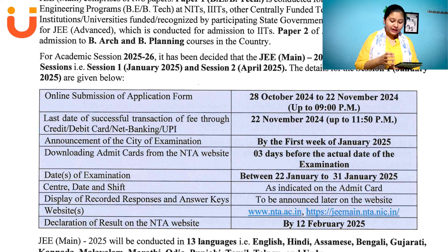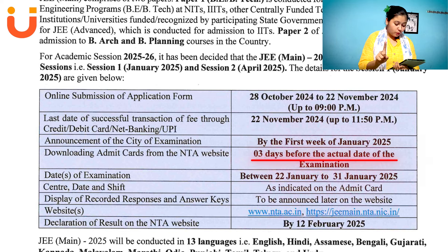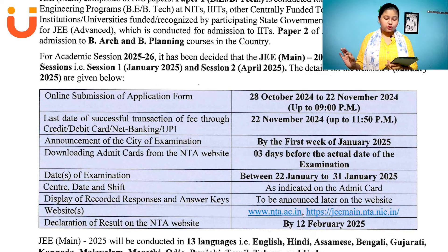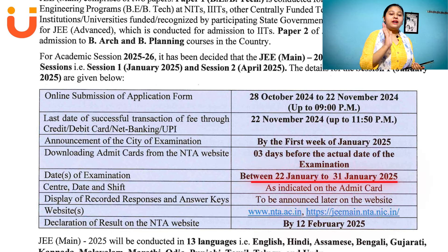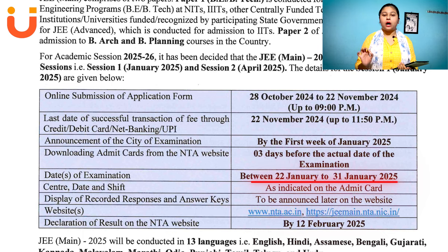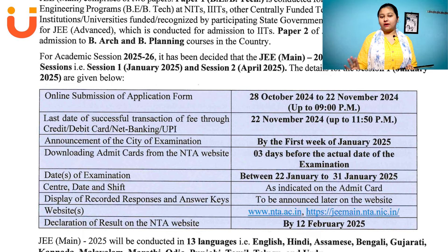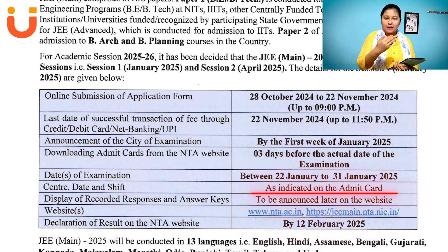Downloading admit cards from the NTA website — you can download your admit card from the NTA website 3 days before the actual date of examination. The date of examination for JMains first attempt is between 22nd January to 31st January 2025. Your JMains first session will be held within this period. Confirmed.